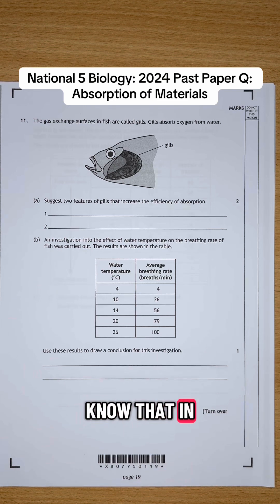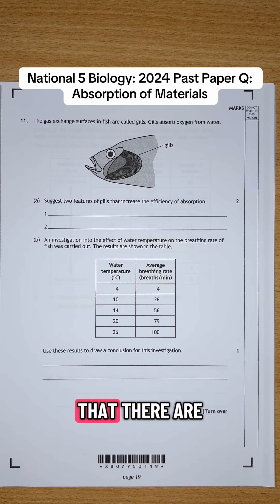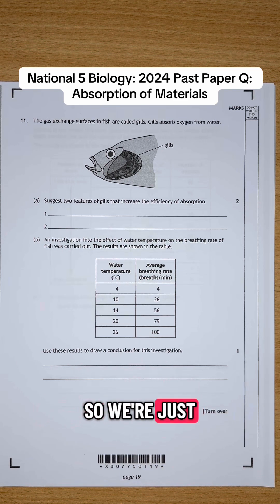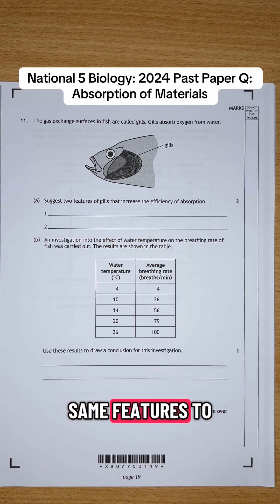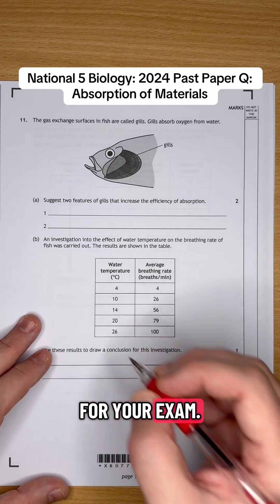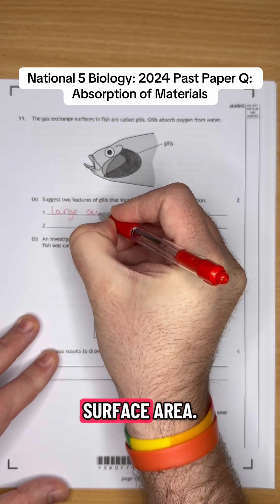Okay, so we know that in the lungs of a human, in the alveoli of an animal, that there are certain features that increase the efficiency of absorption. So we're just going to apply those same features to this one, okay? And there are three main features that you guys need to remember for your exam. The first one is a large surface area.